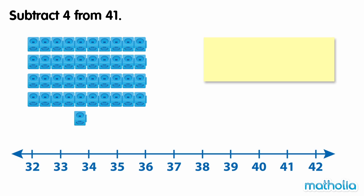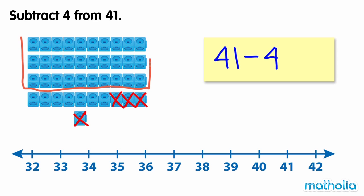Subtract 4 from 41. We need to find 41 minus 4. We can use the cubes to help us. Let's cross off four ones and count the number of cubes left: 1, 2, 3, 4. There are three tens and seven ones. Three tens and seven ones is 37. So 41 minus 4 equals 37.